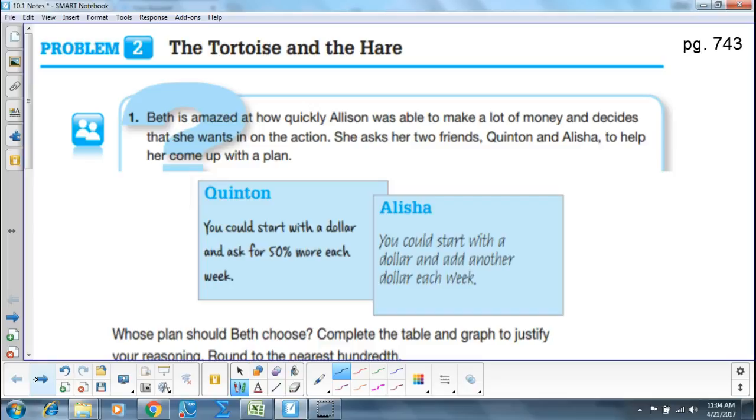The scenario is that Beth and Allison are doing chores for their neighbors - raking the lawn, painting the house, that kind of thing. It's their side job. They're young entrepreneurs, and they want to make some more of that green, that cool, hard cash. Beth asked Quentin and Alicia to help her come up with a plan where she can get more dollar-dollar bills.